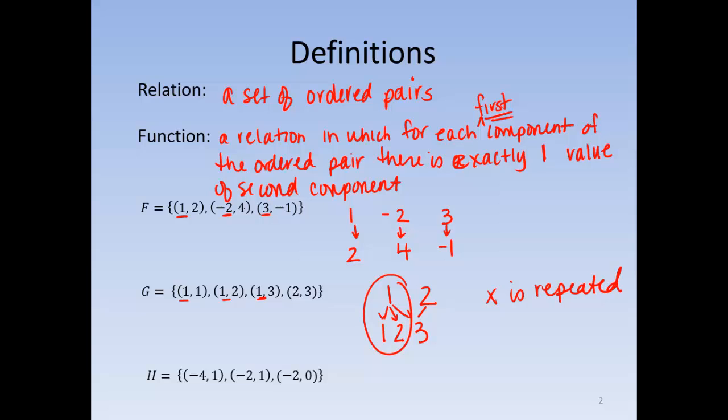Let's take a look at the last. H, negative 4 and negative 2 are the first, and then we have 1 and 0. Negative 4 goes with 1, but negative 2 goes with 1 and 0, so this is not a function either. We do not want X to be repeated.